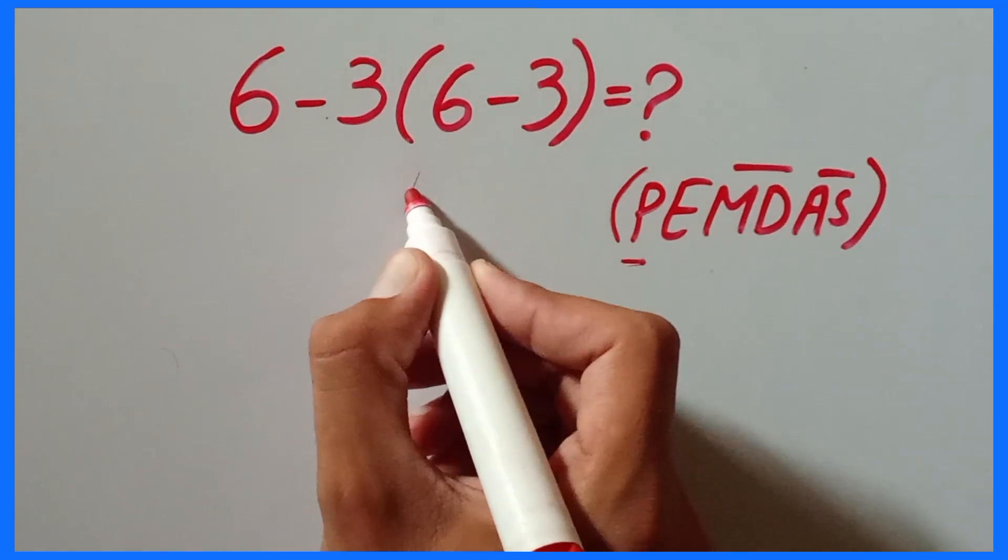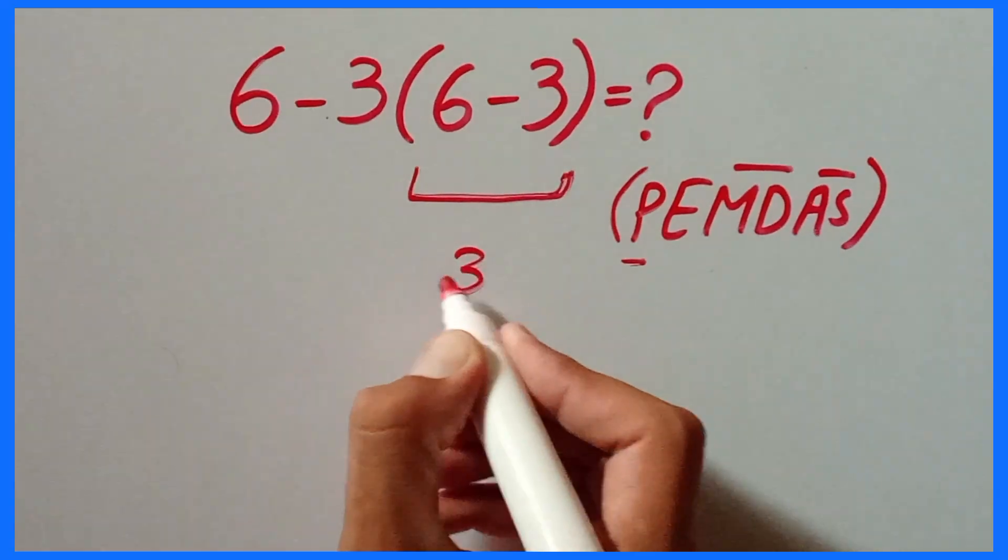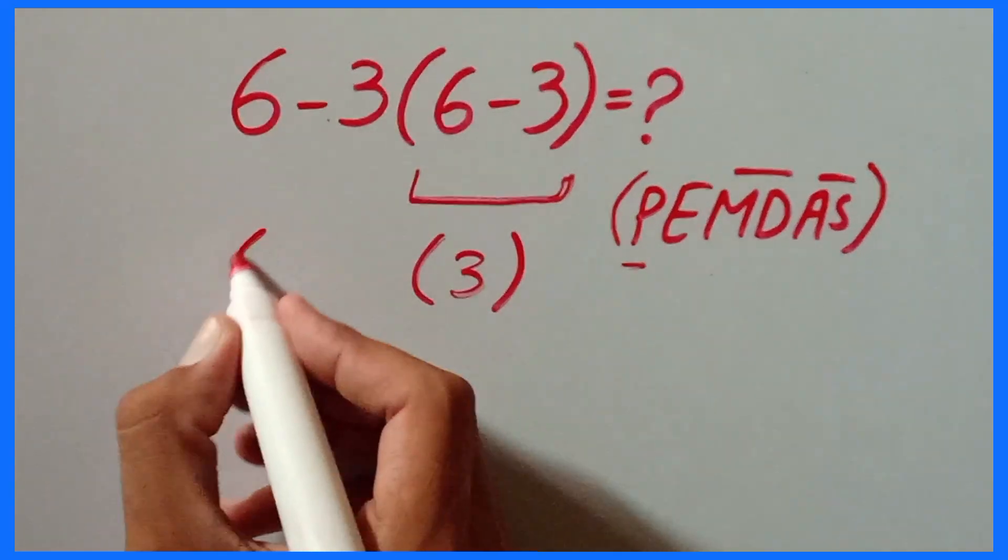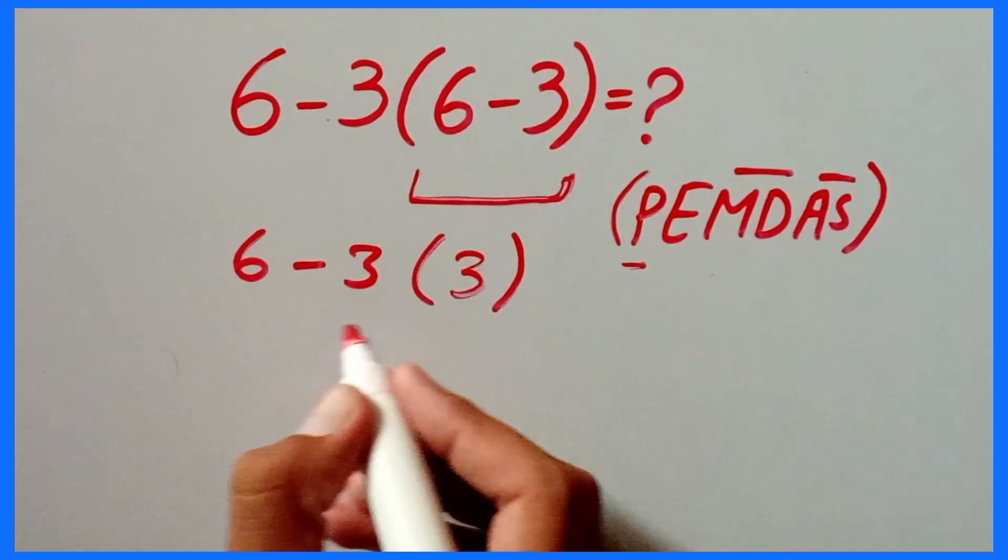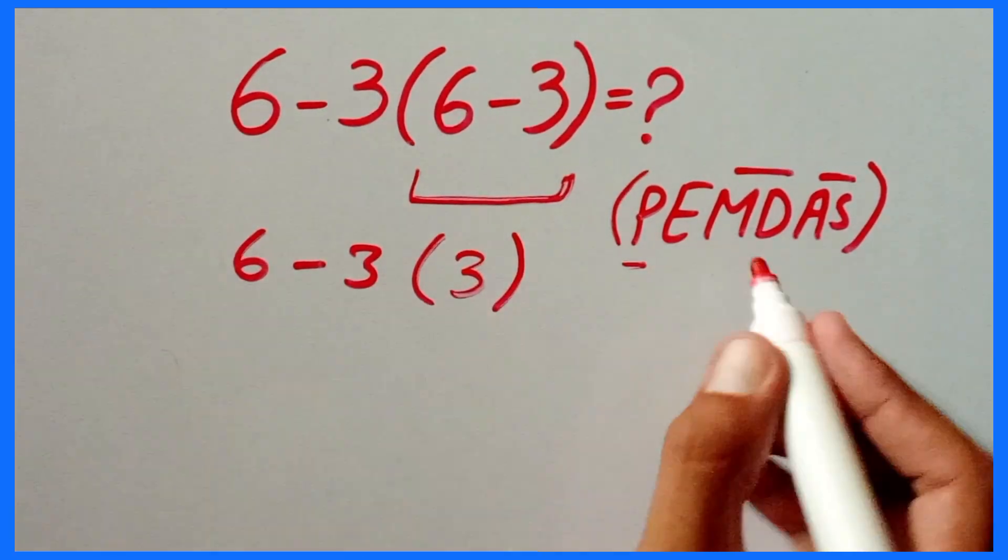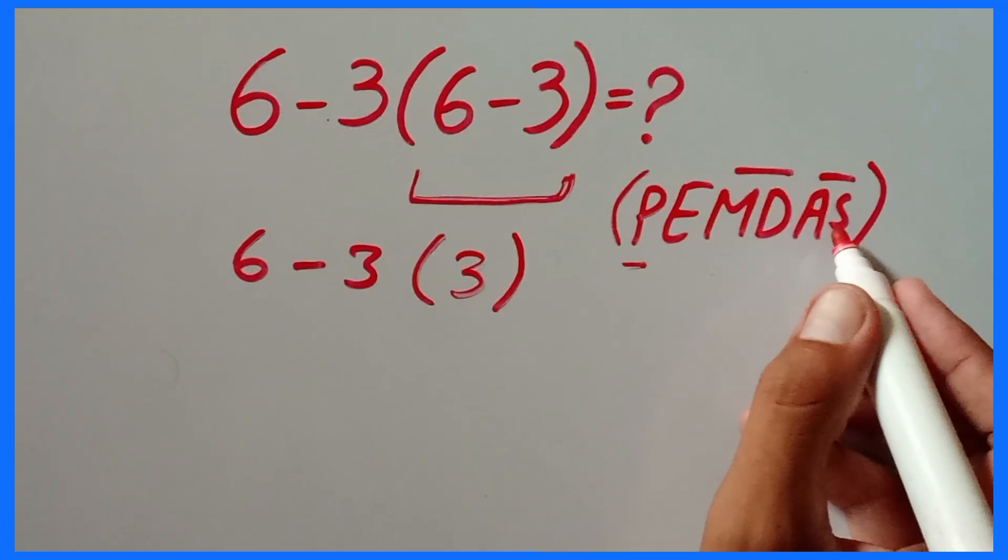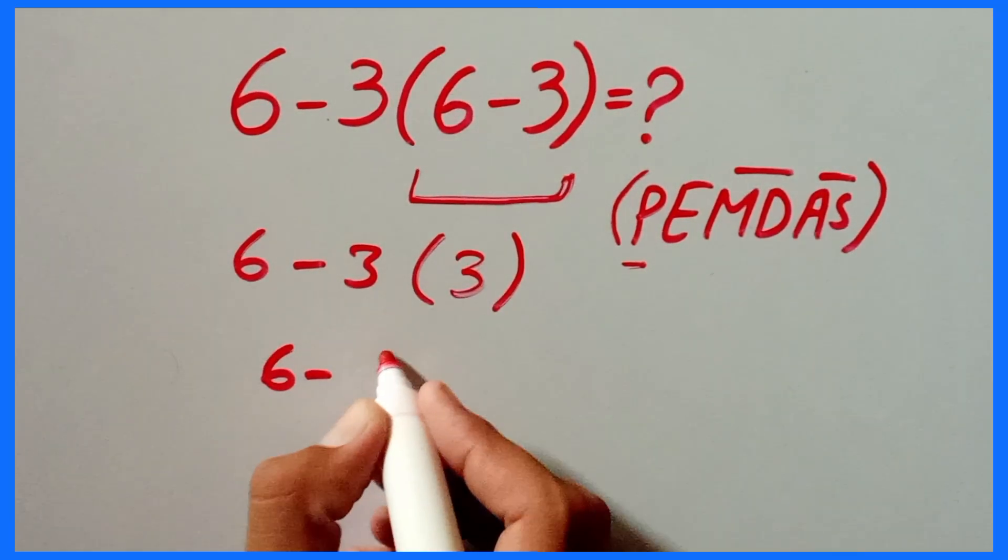So 6 minus 3 which is equal to 3. Okay guys, so 6 minus 3 parenthesis 3. Now firstly we will solve multiplication because multiplication has higher priority than subtraction. So 6 minus 3 times 3 which is equal to 9.